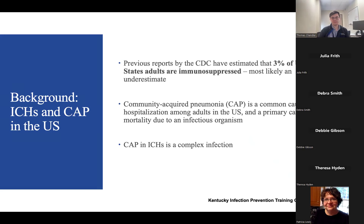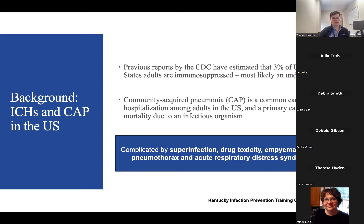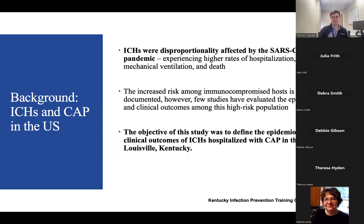When an immunocompromised host develops community-acquired pneumonia, this infection is often complex. It can be complicated by superinfection, drug toxicities, empyema, sepsis, and acute respiratory distress syndrome. Most recently during the SARS-CoV-2 pandemic, we saw how immunocompromised hosts were disproportionately affected, experiencing higher rates of hospitalization, ICU care, mechanical ventilation, and death.